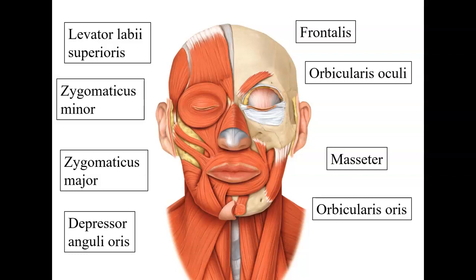Next we go to the depressor anguli oris, located right here. Depressor means to lower, anguli means the angle of the lip, and oris means the mouth. So it literally depresses or pulls the corner of the mouth in a downward direction. That's the depressor anguli oris.